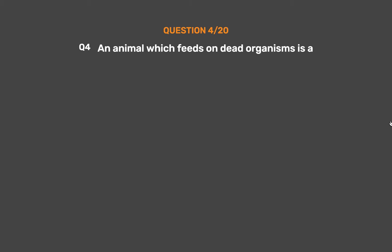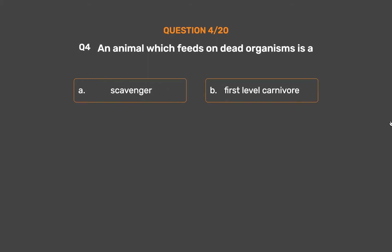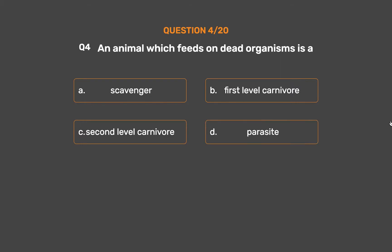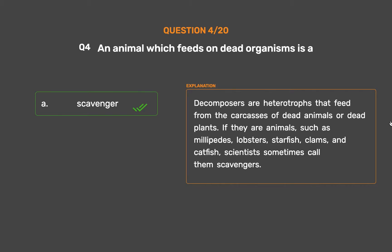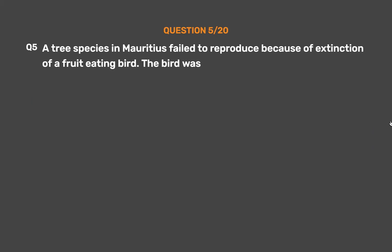Question number 4. An animal which feeds on dead organisms is. Option A: Scavenger. Option B: First level carnivore. Option C: Second level carnivore. Option D: Parasite. The correct answer is Option A: Scavenger. Decomposers are heterotrophs that feed from the carcasses of dead animals or dead plants. If they are animals, such as millipedes, lobsters, starfish, clams, and catfish, scientists sometimes call them scavengers.